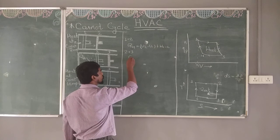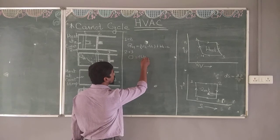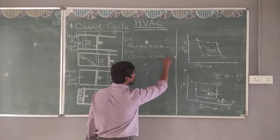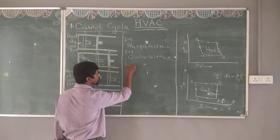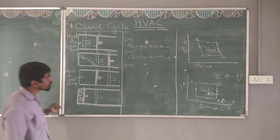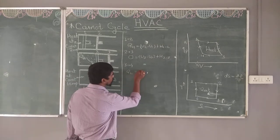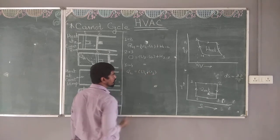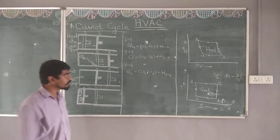For process 2 to 3, there is no heat exchange — it is a reversible adiabatic process — so: 0 = (U3 − U2) + W₂₃. Again, expansion is taking place, so it is positive work. For process 3 to 4, heat is extracted from the system at constant temperature: QL = (U4 − U3) − W₃₄. As compression is taking place, it is negative work.